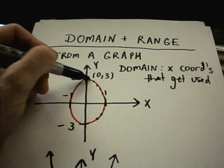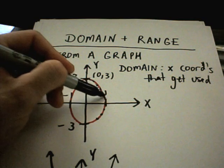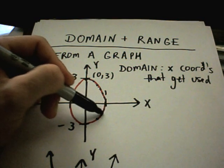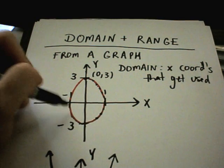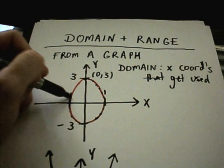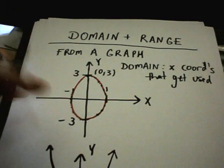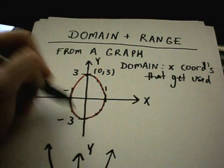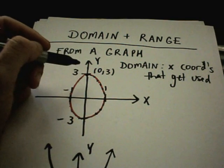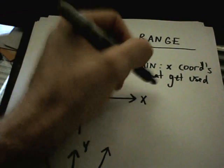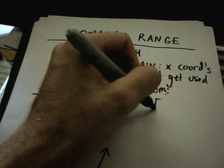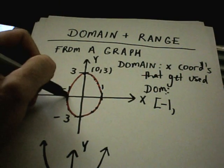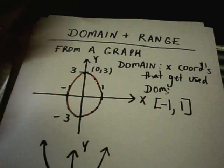As I move to the right, the x-coordinates are going to get bigger and bigger until I get to 1. Then they're going to decrease until I go back to 0, and then decrease further until I get to negative 1, and then start increasing again. So the domain is all x values between negative 1 inclusive all the way up to positive 1 inclusive.